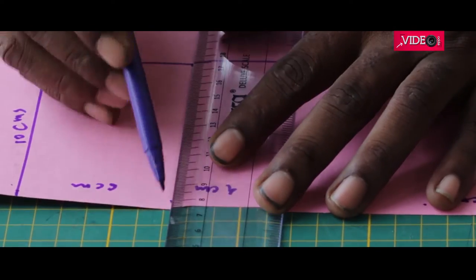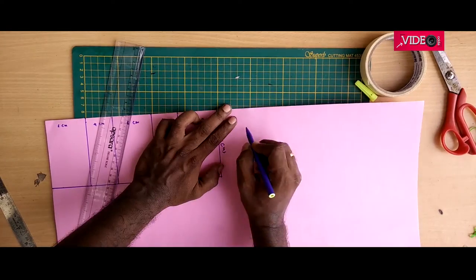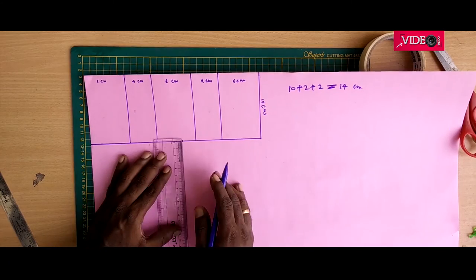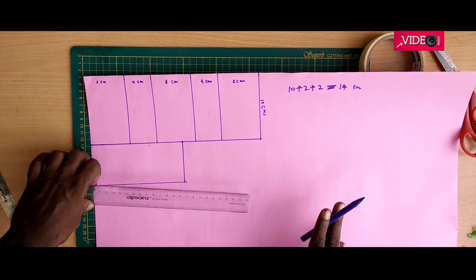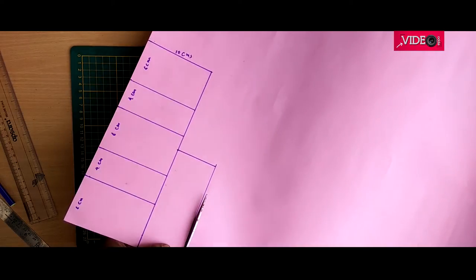So let's do the marking. You will also need another strip of 14 centimeters by 6 centimeters. So let me just mark it. Now cut the strips.